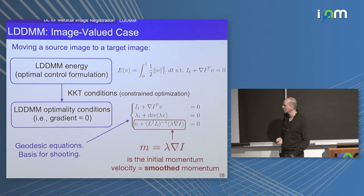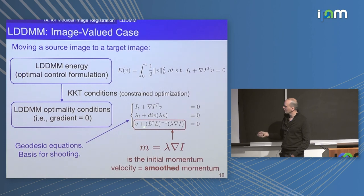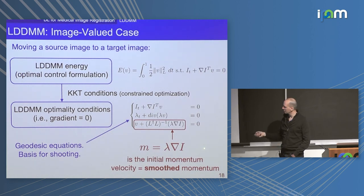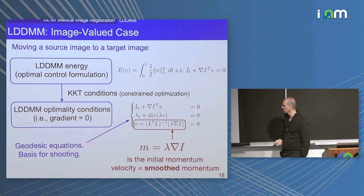A couple of important things to note. This quantity — lambda times gradient of i — is also called the vector-valued momentum. You go from this momentum to the velocity by applying a particular operator, essentially a smoothing of the momentum field. So the velocity field will be very smooth, but the momentum field doesn't have to be. Interestingly, the momentum can be written as a product between a scalar field and a vector field. So if the gradient of the image is zero — for example in binary shapes — there will be no momentum by construction.